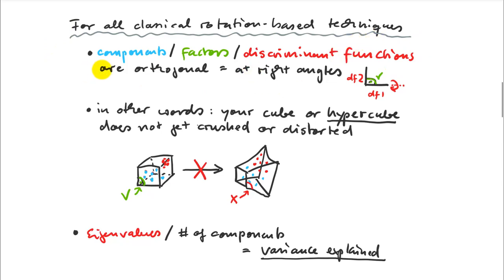All components are orthogonal — at right angles to each other — meaning they are independent dimensions in your data set. DF1 and DF2 are always at a right angle because after stretching along one direction, you rotate around that axis. Another way to think about orthogonality: your hypercube does not get crushed or distorted. Right angles in your original coordinate system are always maintained in the rotated system.